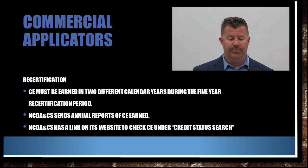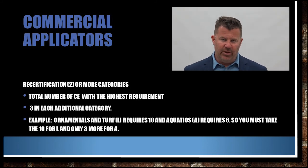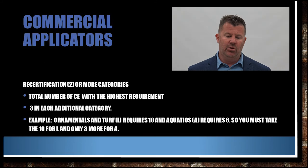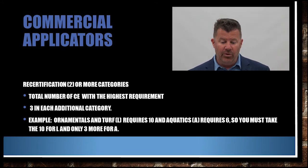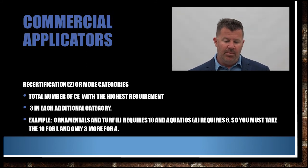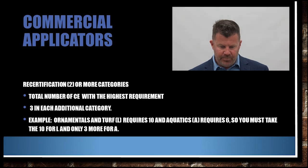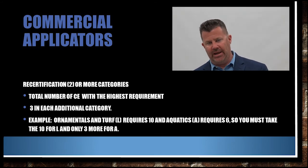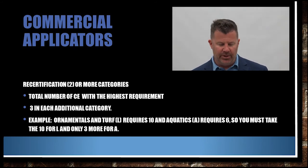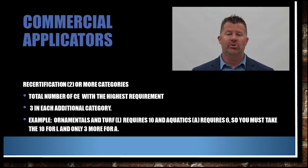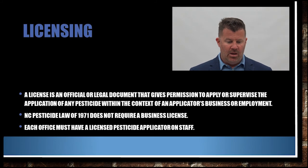If you have two or more categories, you need to get the total number of CEUs with the highest requirement. For example, ornamentals and turf requires 10 hours and aquatics requires 6 — so you must take 10 hours for ornamentals and turf, but you only need 3 hours specifically in aquatics. Whichever category has the highest requirement, you must meet that total, plus at least some hours in each additional category within your certification period.